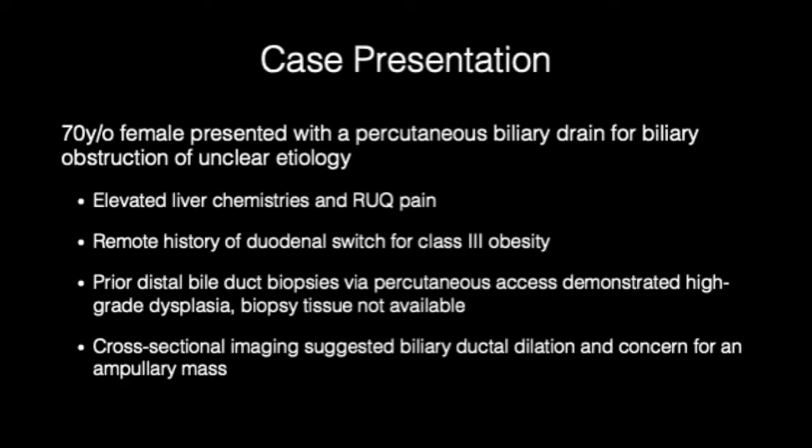Our patient was a 70-year-old female who presented with an indwelling percutaneous biliary drain which was placed for biliary obstruction of unclear etiology. She initially presented to an outside hospital with elevated liver chemistries and right upper quadrant pain. She had a remote history of a duodenal switch performed approximately 15 years ago for the treatment of class III obesity. Prior distal bile duct biopsies had been obtained at an outside institution using digital single operator cholangioscopy, which was passed via the percutaneous access site.